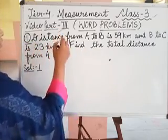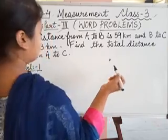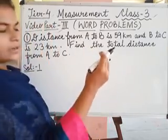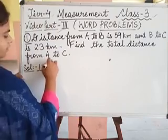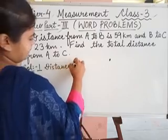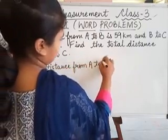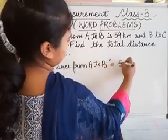For addition, distance from A to B is 59 km. We will write the first statement, distance from A to B, that will be 59 km.